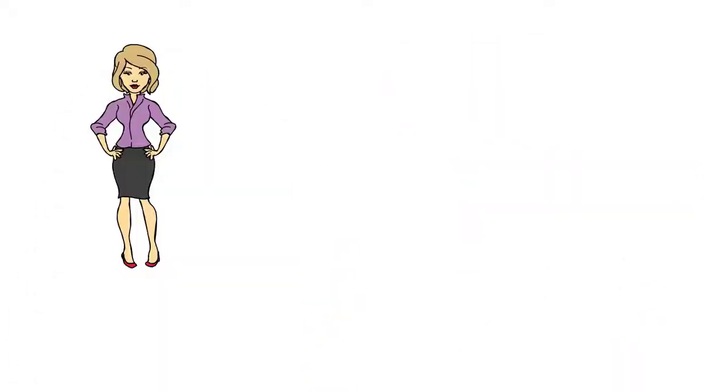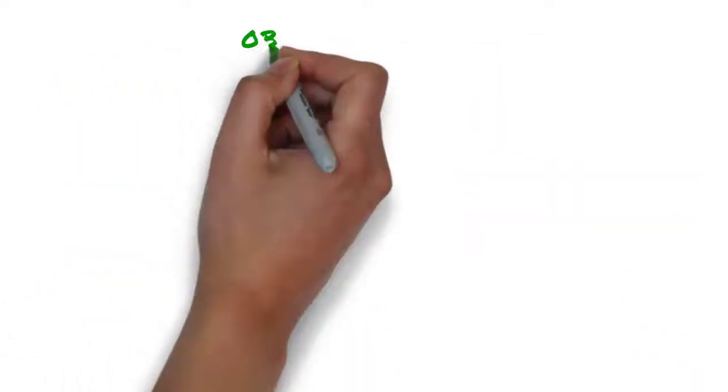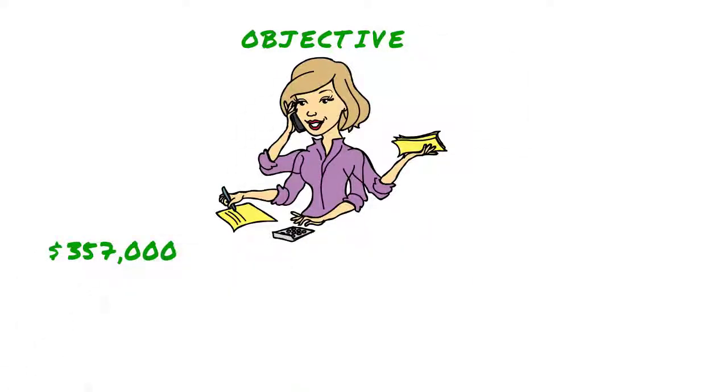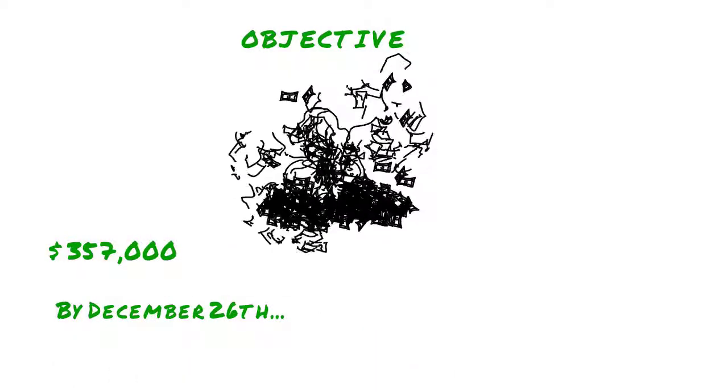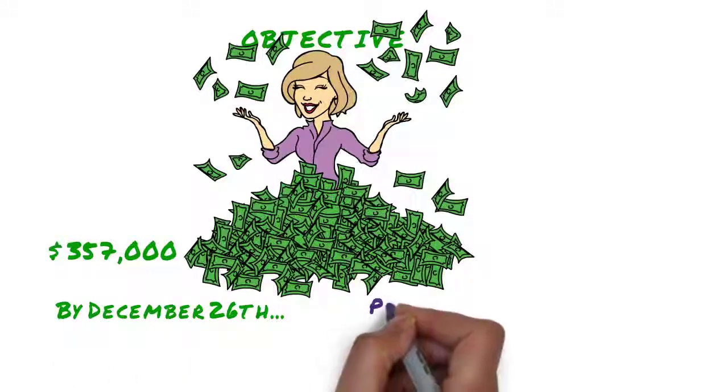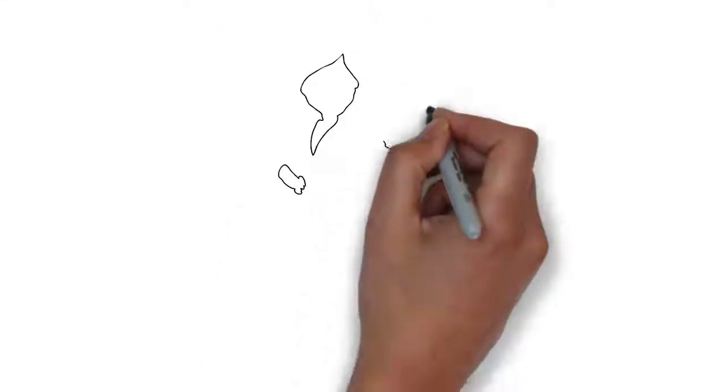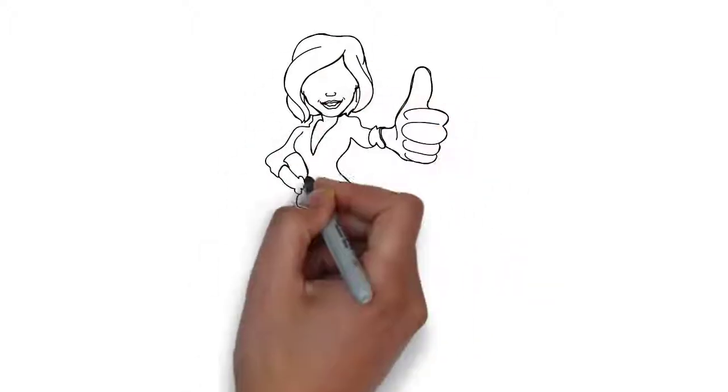My name is Donna Robinson, and I want to tell you that using your system, I set an objective to generate $357,000 by December 26th. When all was said and done, I had exceeded the $357,000 by over $169,000. This was an amazing process.